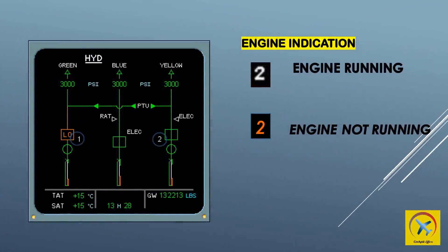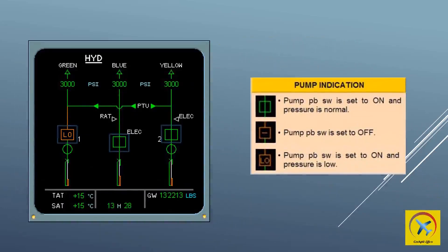Pump identification displays white after engine start and indication becomes amber when N2 is below idle. Engine pump indication displays green when the associated engine pump switch is on and hydraulic pressure is normal, displays amber when the associated engine pump switch is off, and displays amber low when the associated engine pump switch is on and hydraulic pressure is low.